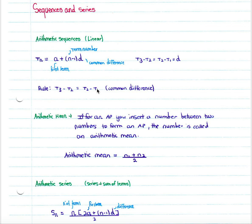For an arithmetic sequence, if you insert a number between two numbers, that number is called an arithmetic mean. Your arithmetic mean is calculated by taking n1 — a term — plus the next term in the sequence, divided by 2. This can sometimes be useful when calculating arithmetic sequences, however it's not essential in the syllabus.